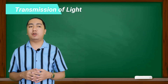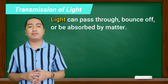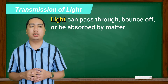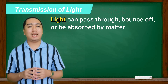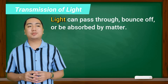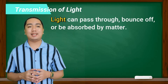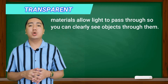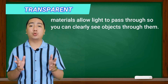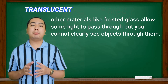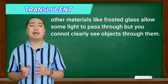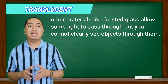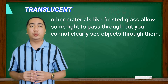Now let's proceed to the transmission of light. Light can pass through, bounce off, or be absorbed by matter. Light easily passes through air, and it can also pass through glass and water. Matter that transmits most of the light that strikes it is said to be transparent. Transparent materials allow light to pass through so you can clearly see objects through them. Other materials, like frosted glass, allow some light to pass through but you cannot clearly see objects through them. These materials are what we call translucent.